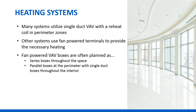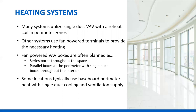We're seeing more people using series boxes and fewer using parallel boxes. In cold climates, baseboard perimeter heat is still being used with single duct cooling and ventilation. Wisconsin is an example primarily using baseboard perimeter heat. Although in places like Montana, we're seeing the single duct VAV box. Climate doesn't necessarily tell the whole story.